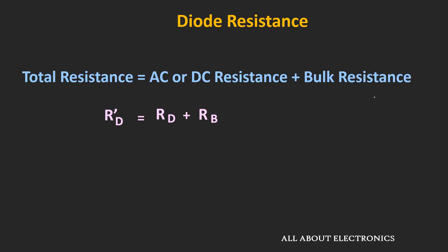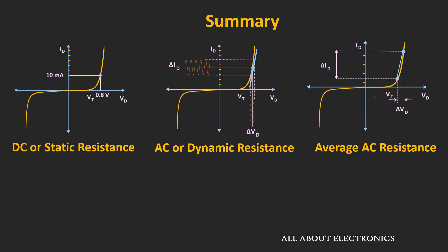To summarize: the resistance of the diode can be categorized based on the applied input signal. If the input is a DC signal, the resistance offered is DC resistance, found from the operating voltage and current. If an AC signal is applied, the diode resistance can be found by drawing a line tangent to the Q-point, or using the expression AC resistance = thermal voltage / diode current. If the AC signal has a very large voltage swing, the resistance is found by drawing a line between the two extreme points of operation — known as the average AC resistance.